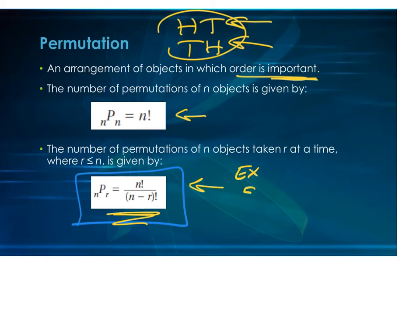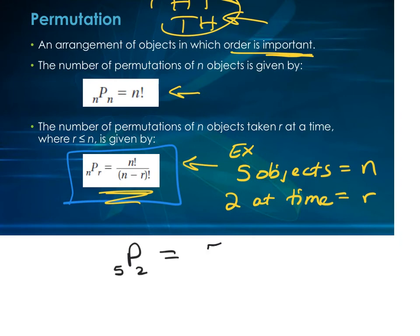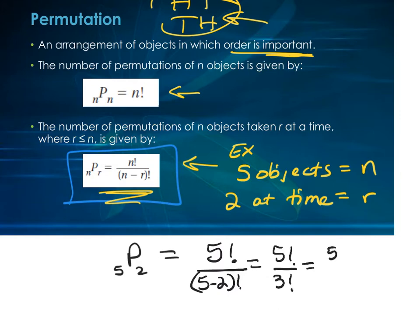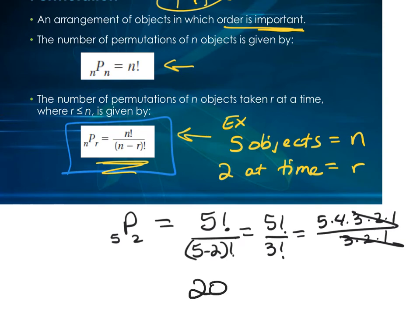For example, say we have five trophies and we're arranging them on a shelf but only want to display two at a time. The five is N and two is R. So we write P(5,2) and use the formula: five factorial over (five minus two) factorial. This becomes five factorial over three factorial. Expanding: five times four times three times two times one over three times two times one. Those cancel, leaving just five times four, which equals 20 ways to arrange two of the five trophies.